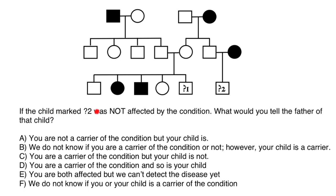The last question: if the child marked with question mark two was not affected by the condition, what would you tell the father of that child? Variant A says: you are not a carrier, but your child is. Can we tell this to the father? No, because this person is an obligate carrier — he must have gotten a recessive allele from the mother's side and a dominant normal allele from his father's side to be phenotypically normal, but he is still a carrier. There's no way the second allele would be normal because the mother has no normal allele. So we cross out variant A.